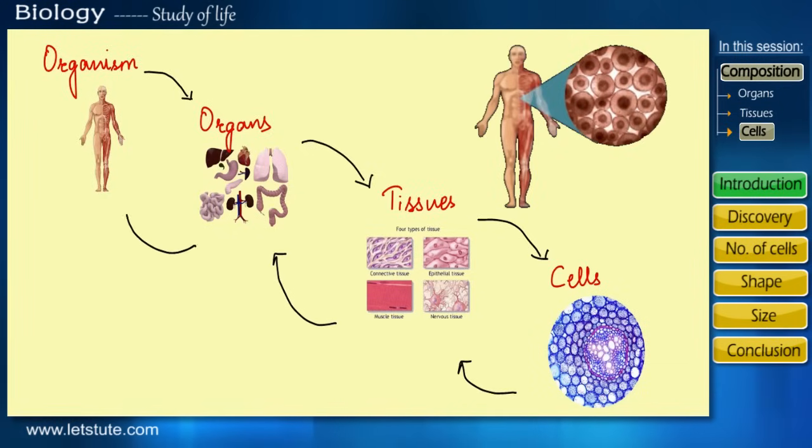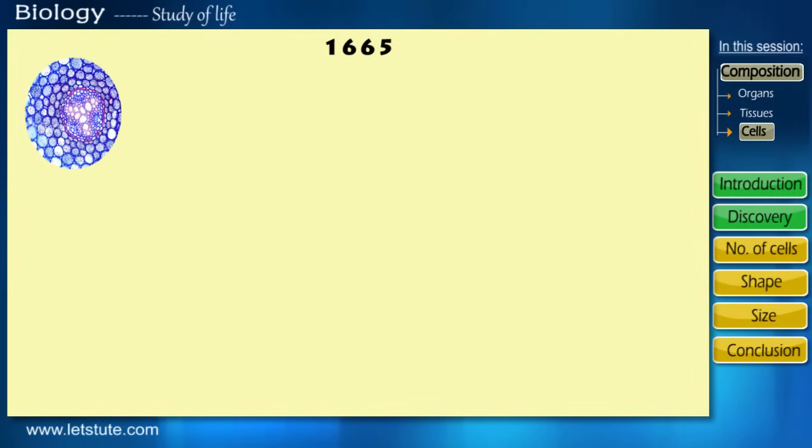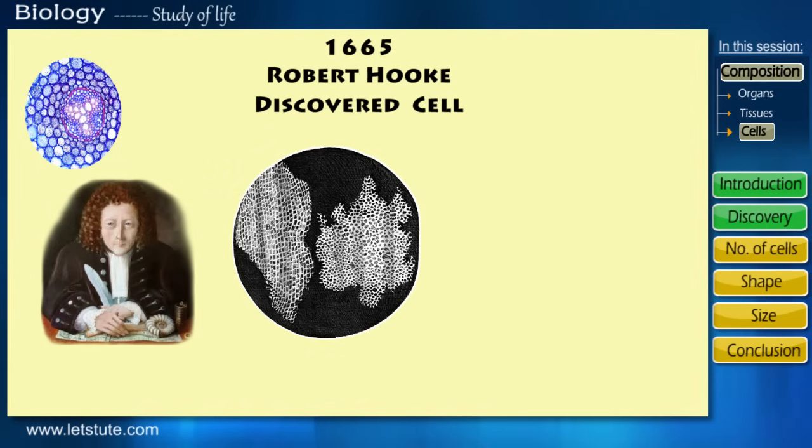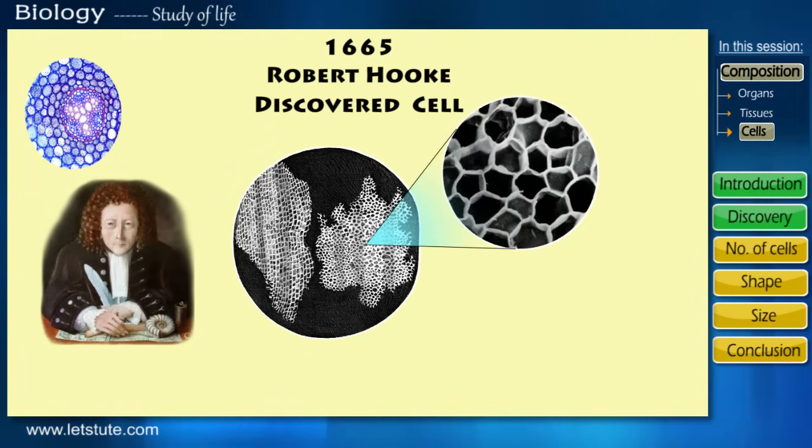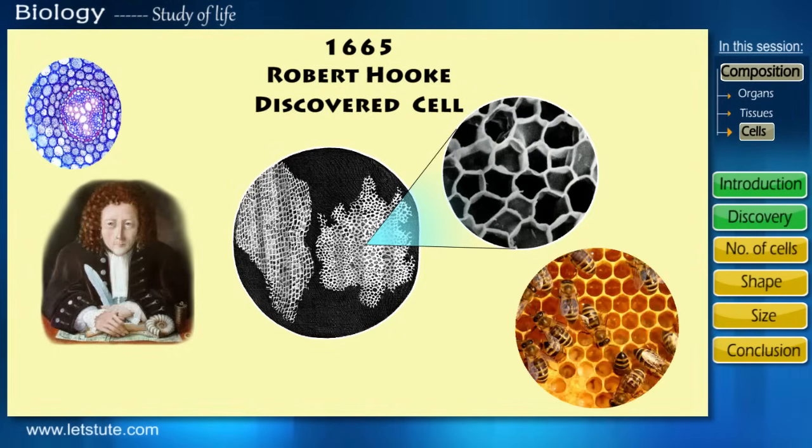So we can say that the cells are the basic fundamental unit of life. But how were the cells discovered? In 1665, Robert Hooke discovered cells. He observed dead cells within the cork of a bark of a tree using an old basic microscope. He observed empty spaces contained by a wall and named them cells because they resembled small compartments.